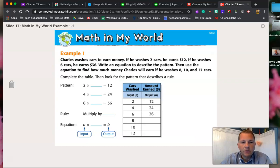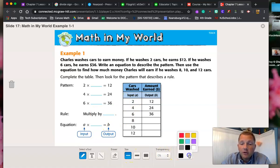Alright, so let's look at the next one over here. Charles washes cars to earn money. If he washes 2 cars and earns $12. If he washes 2 cars, he earns $12. If he washes 6 cars, he earns $36. Writing equations to describe the pattern. They're giving us the basics of the equation. They're telling us it's multiplication. They're giving us some of the information for this chart already. So all we have to do is sort of figure out what's missing, like we've done with all the other charts.